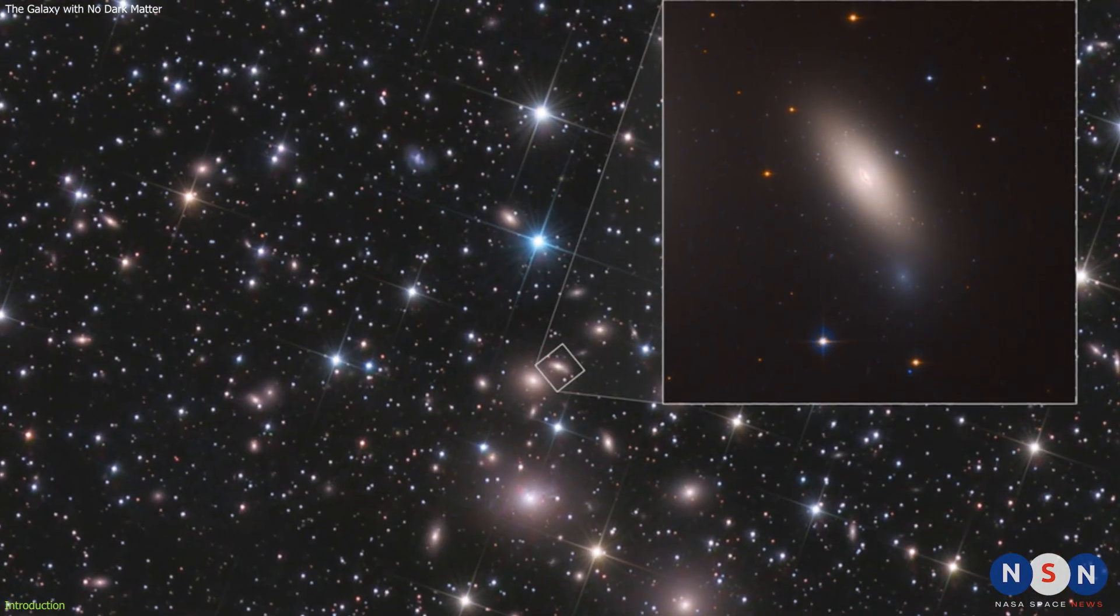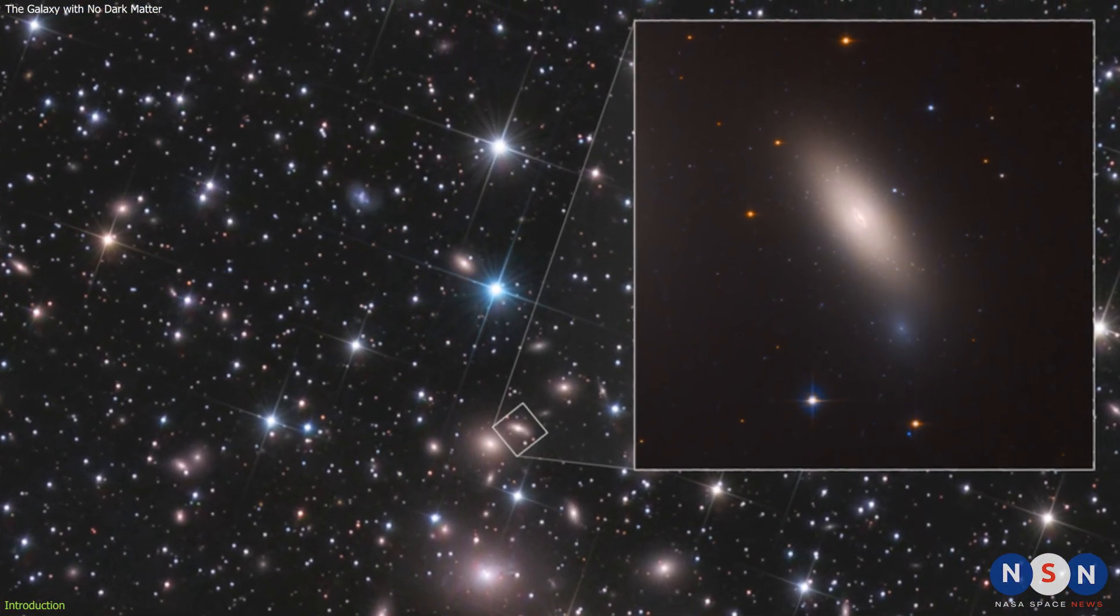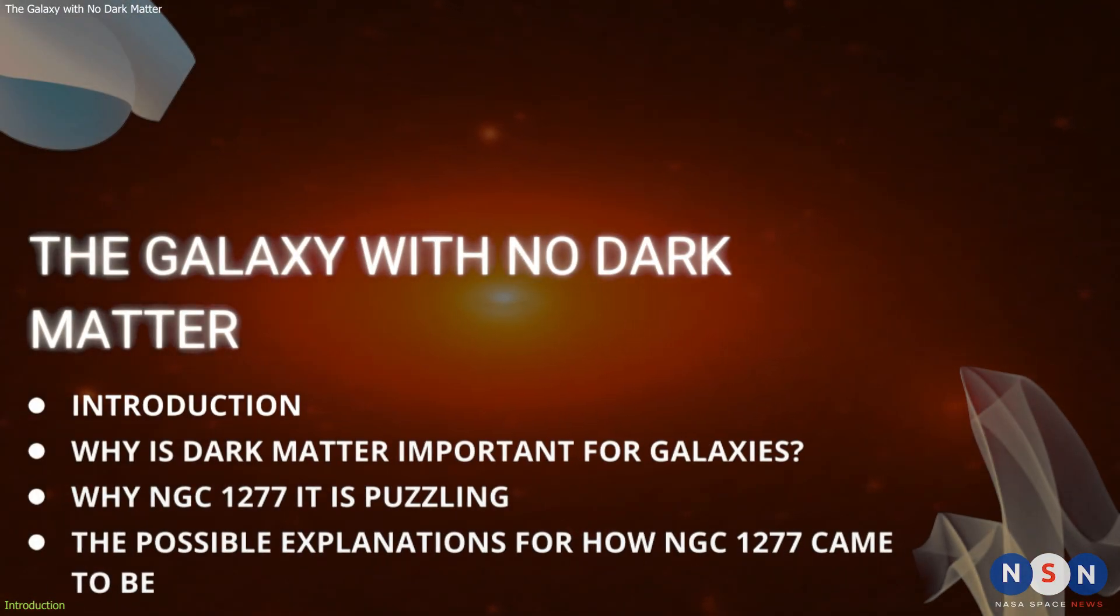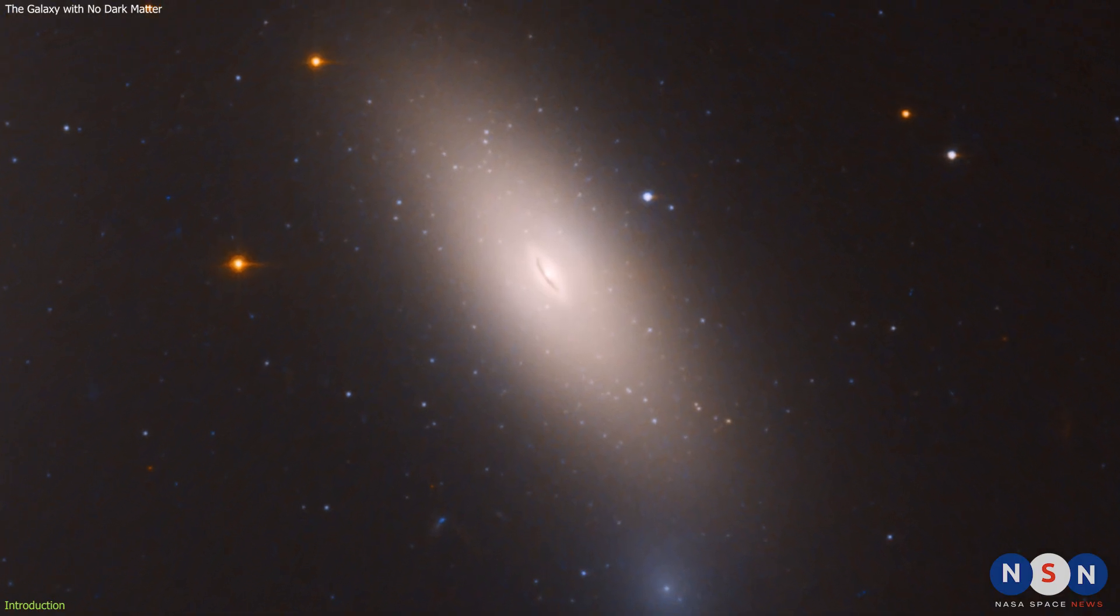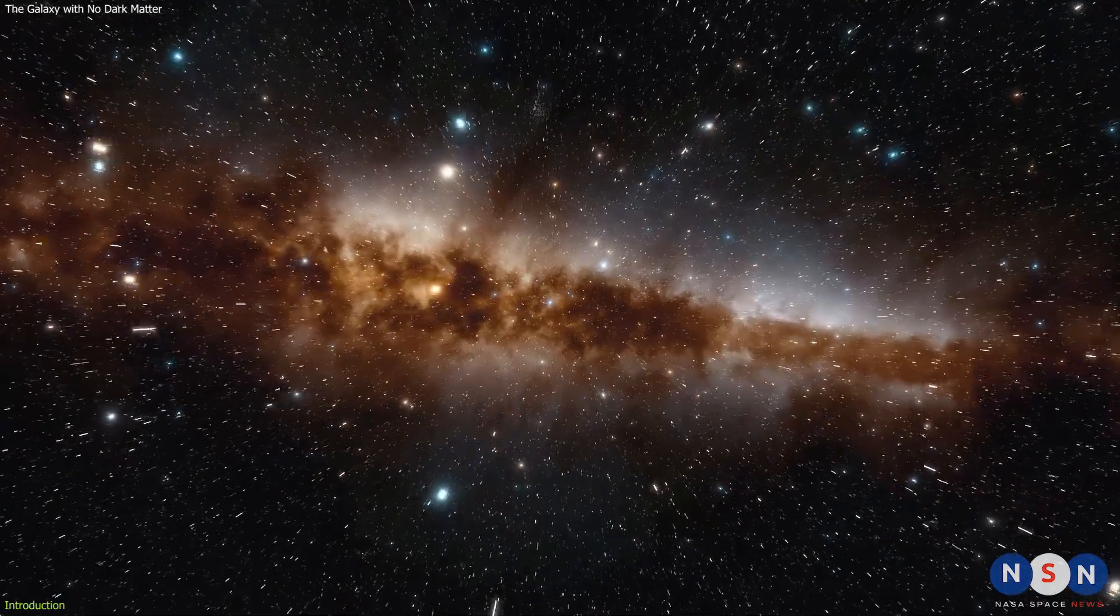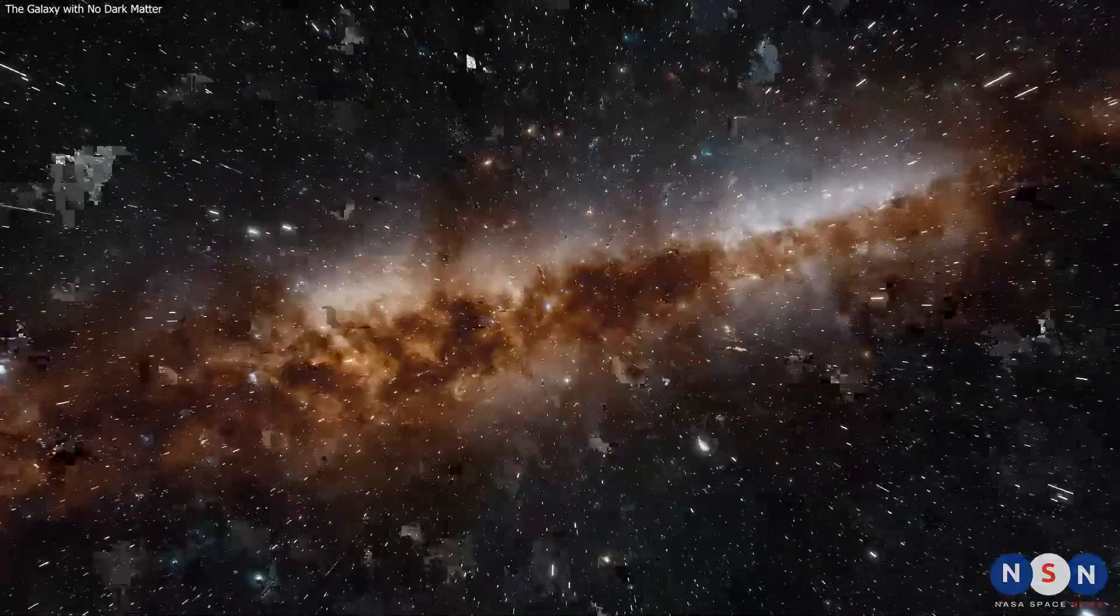This galaxy is NGC 1277, and it is one of the most mysterious and fascinating objects in the cosmos. In this video, we are going to explore this amazing discovery and what it means for our understanding of the universe. We will also look at some possible explanations for how this galaxy came to be and why it is so different from other galaxies. So get ready for a cosmic adventure into the unknown.